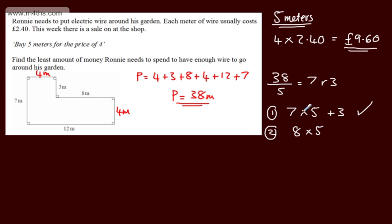So what we're going to do is buy 7 lots of the £9.60 and then 3 additional meters. If we work these out, we're going to have 7 times by the £9.60, and then we're going to have 3 times by the £2.40.